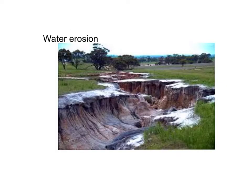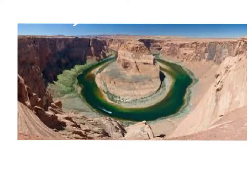Water Erosion. As water flows against sediment, it carries pieces with it. Water can also dissolve the minerals in a rock or cause rust. Softer rock is eroded first, which can create shapes like this. Water is very powerful.